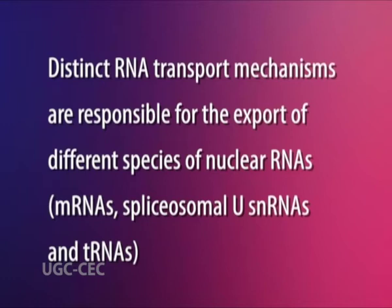Distinct RNA transport mechanisms are responsible for the export of different species of nuclear RNAs: mRNAs, spliceosomal UsnRNAs, and tRNAs. This implies the existence of mechanisms that are able to distinguish between RNA species while in transit.